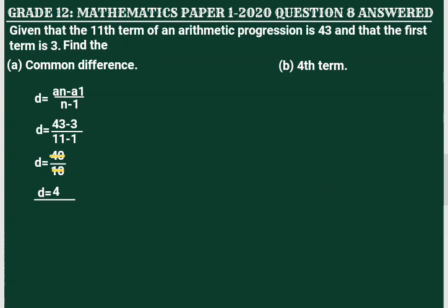Now let's go to question b: find the fourth term. To find the fourth term we are going to use this formula. Sₙ stands for the sequence number — the position of the number we are trying to find. In this case we are trying to find the fourth term, so the sequence number is 4.